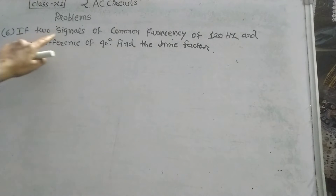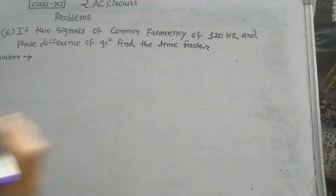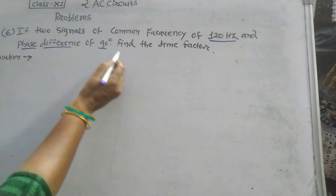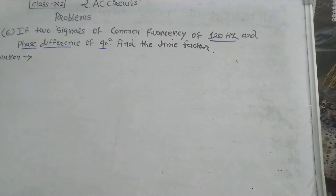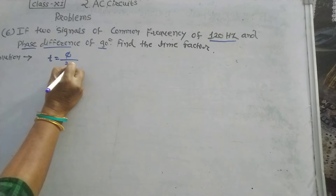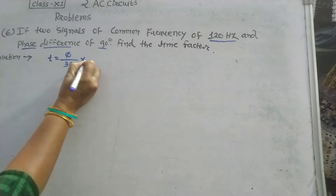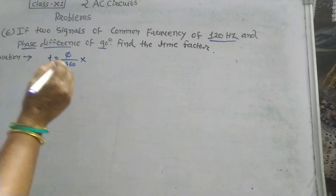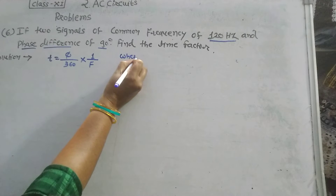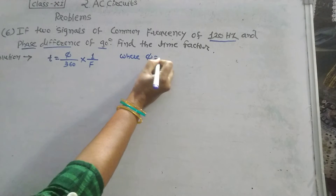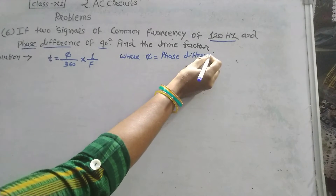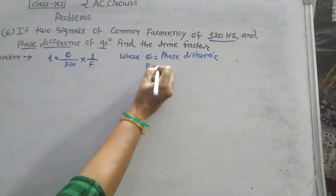Problem 6: Two signals have a common frequency of 120 hertz and a phase difference of 90 degrees. Find the time factor. The formula for time factor is t equals phi divided by 360 into 1 upon f, where phi is the phase difference and f is the frequency.